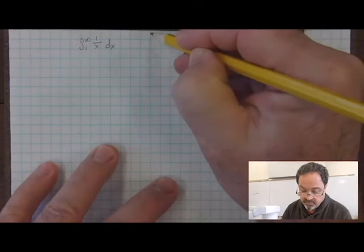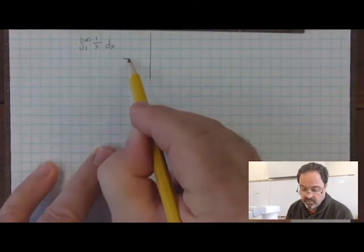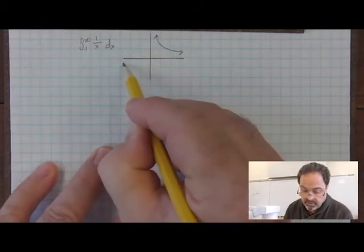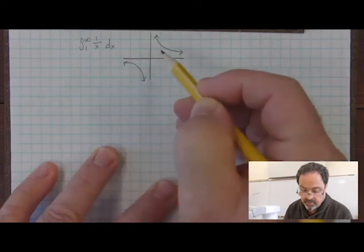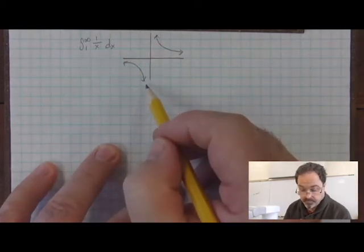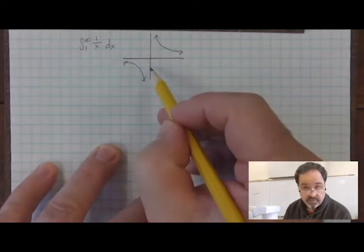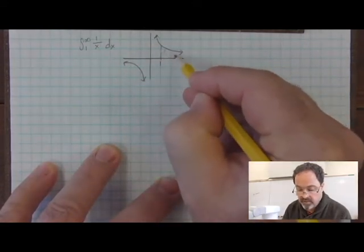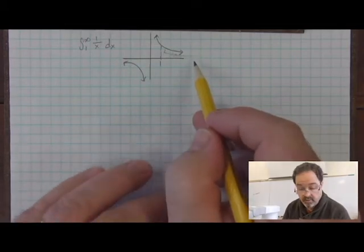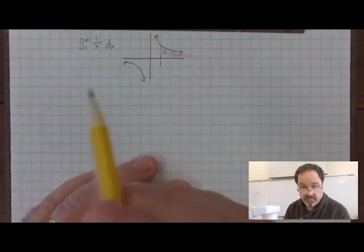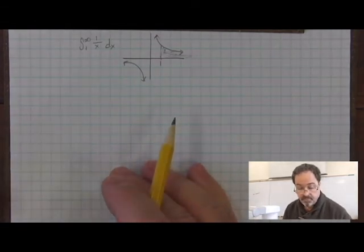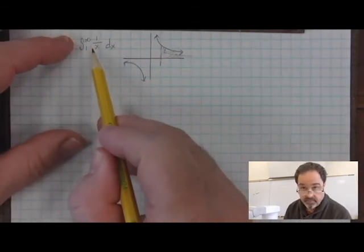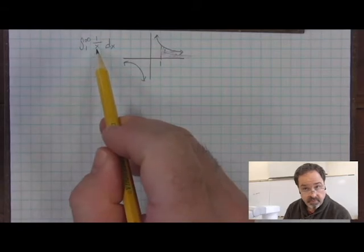Let's first get a visualization of what this integral represents. The integrand is 1 over x — that's a parent hyperbola — and this function has a vertical asymptote at 0. But our asymptote is not worrying us with these bounds. We're starting the area under the curve at 1 and continuing forever. If we apply the fundamental theorem of calculus, we'd have to put the upper bound into the antiderivative, but it's not a value, so we can't do that.